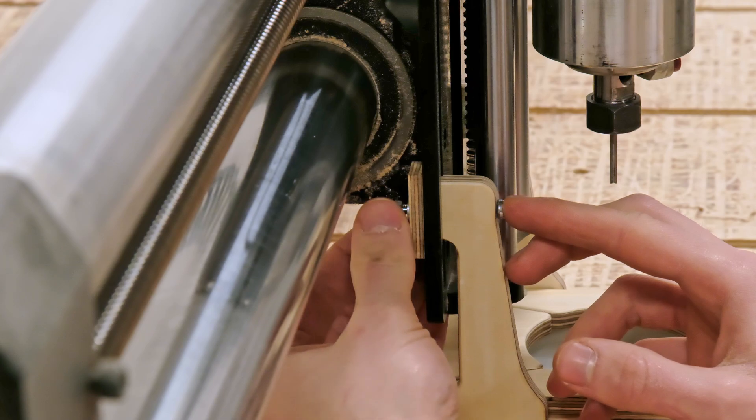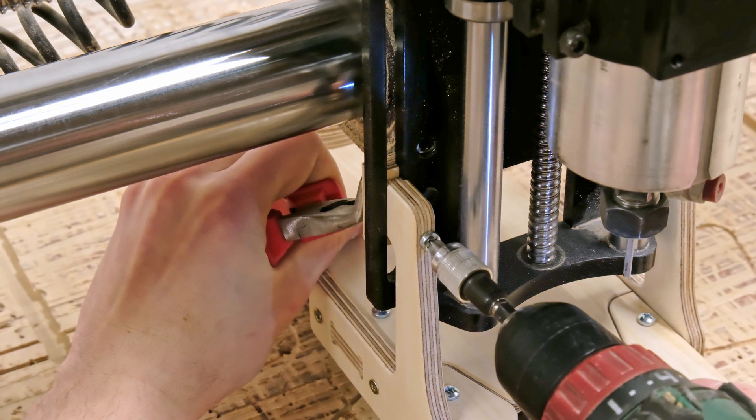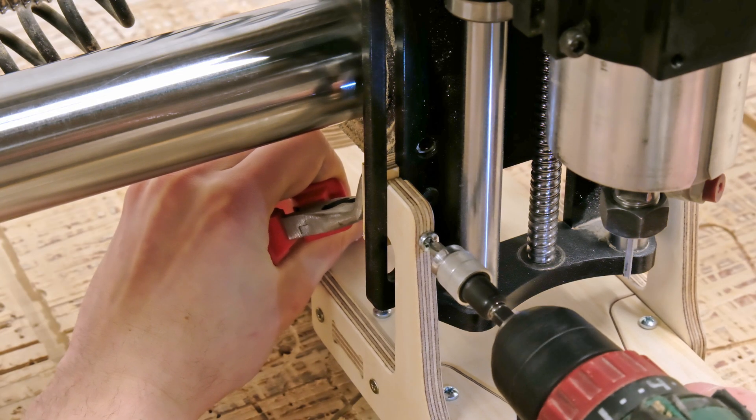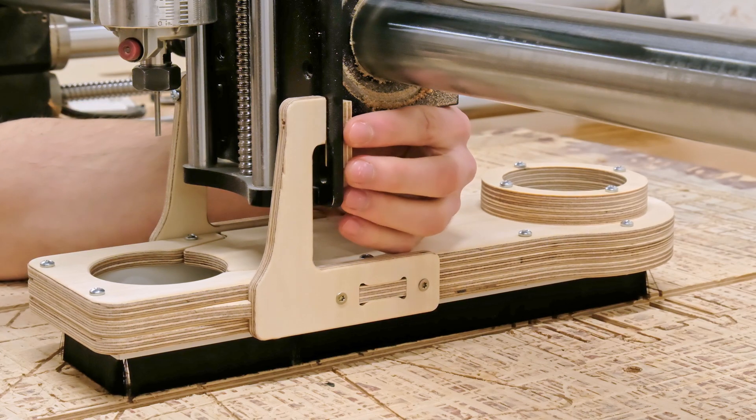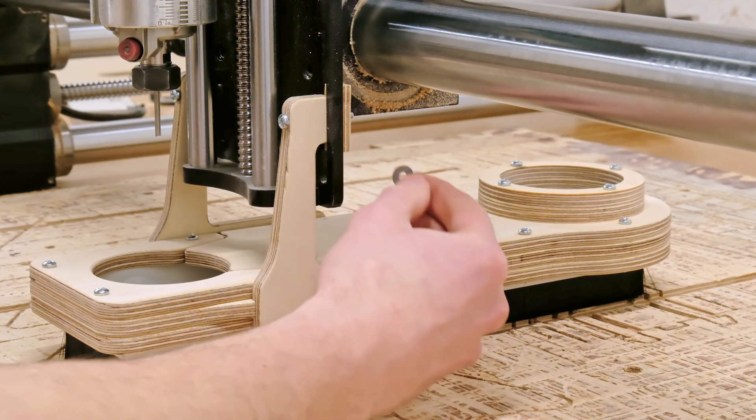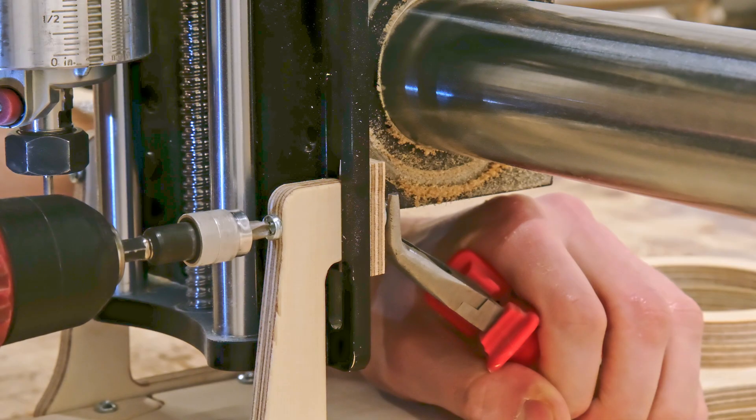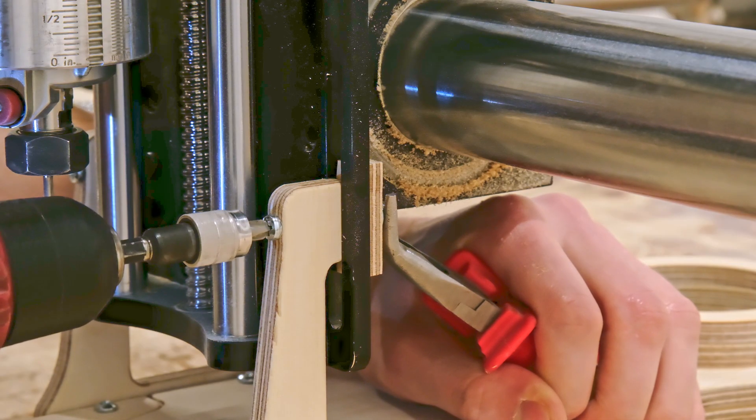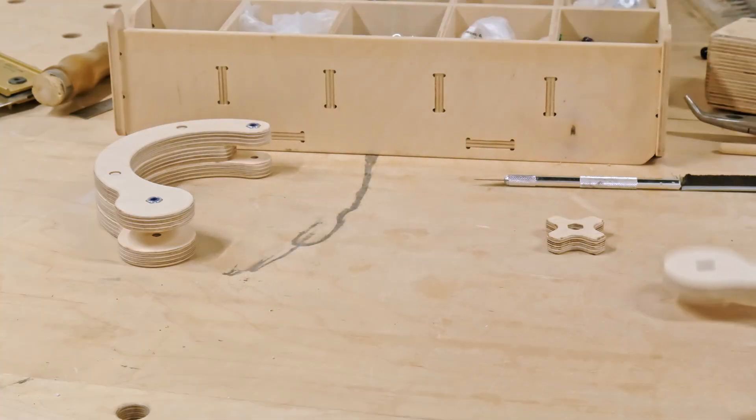This is basically the same mounting mechanism as the original Onefinity dust shoe, just a DIY version. I might be adding a small hex nut holder to the insert part at some point in the future to eliminate the need for a wrench or pliers whenever I need to adjust the height of the dust shoe.